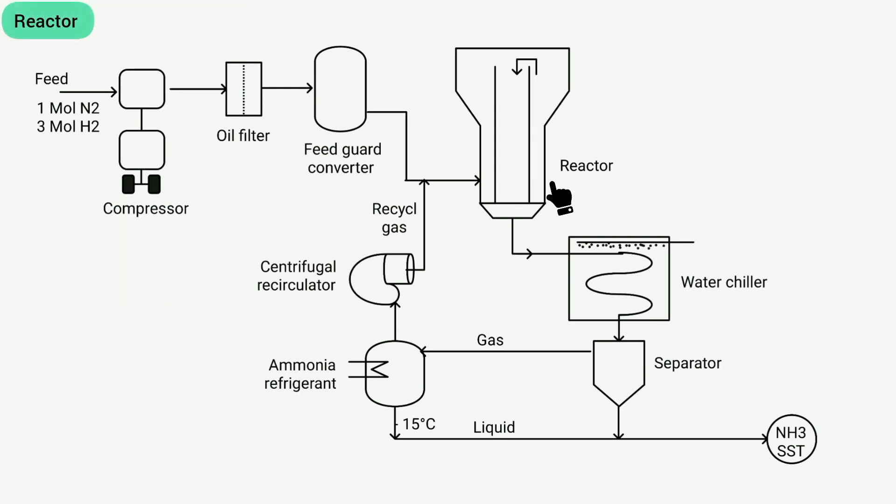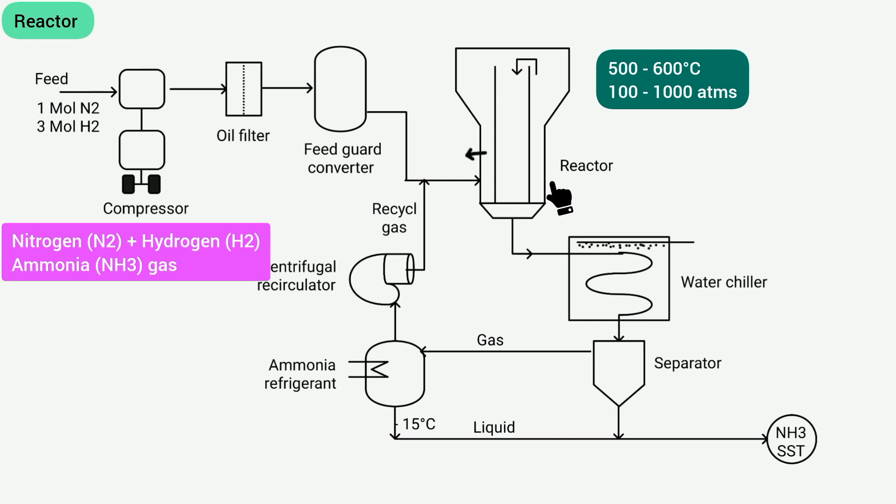This is called the reactor. The tube is inside it where the temperature is 500 to 600 degrees Celsius and the pressure is 100 to 1000 atmospheres. Here nitrogen and hydrogen react with each other in the presence of iron catalyst and then ammonia gas is formed. There is a cold gas zone on its side which maintains the temperature of the feedstock and the temperature of the reactor.